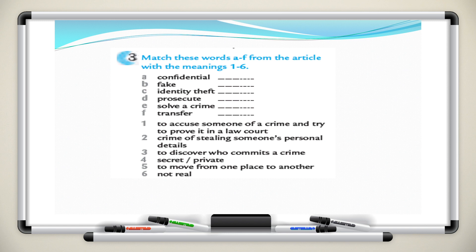Question three: you have words A, B, C, D, E, and F, and the definitions underneath. Match the words with their meanings — you can pause the video and come back for the answers. 'Confidential' means secret or private. 'Fake' means not real. 'Identity theft' means the crime of stealing someone's personal details — they steal your identity. 'Prosecute' means to accuse someone of a crime and try to prove it in a law court. 'Solve a crime' means to discover who committed a crime. And 'transfer' means to move from one place to another.